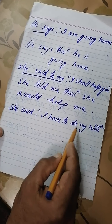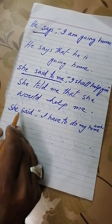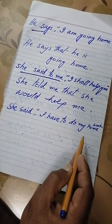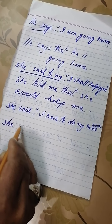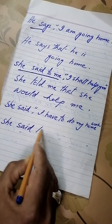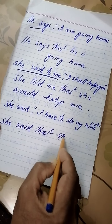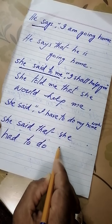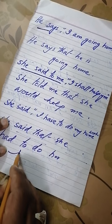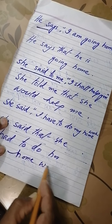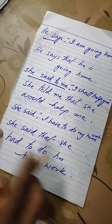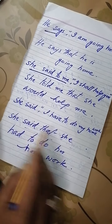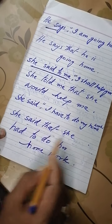Let me come to the last sentence. For instance: 'She said I have to do my homework.' This is direct narration. Now let us change it into indirect narration. She said that she had to do her homework. Its indirect narration is: she said that she had to do her homework.